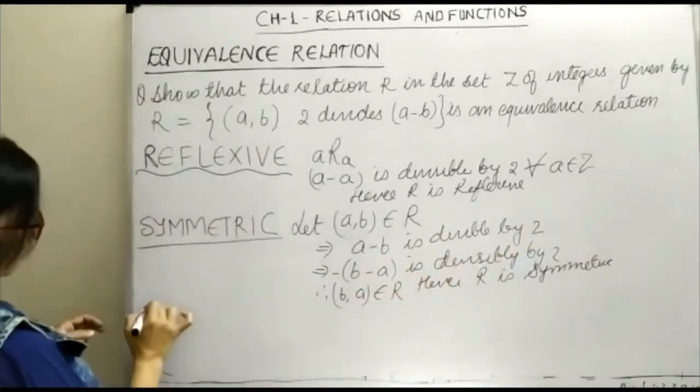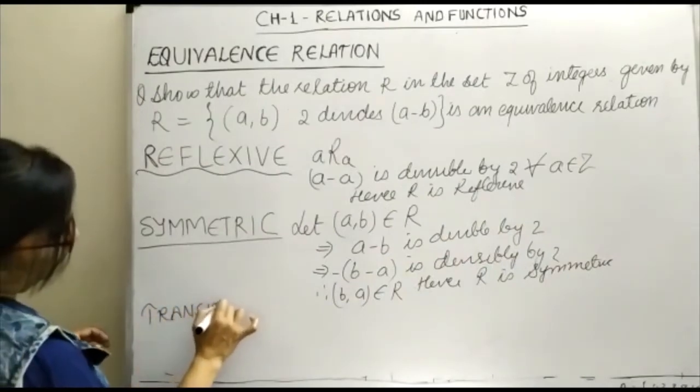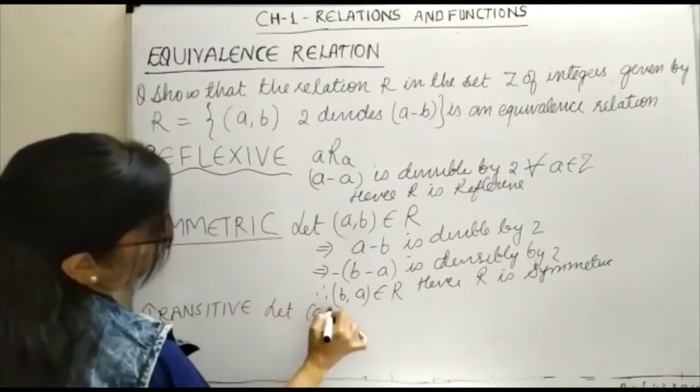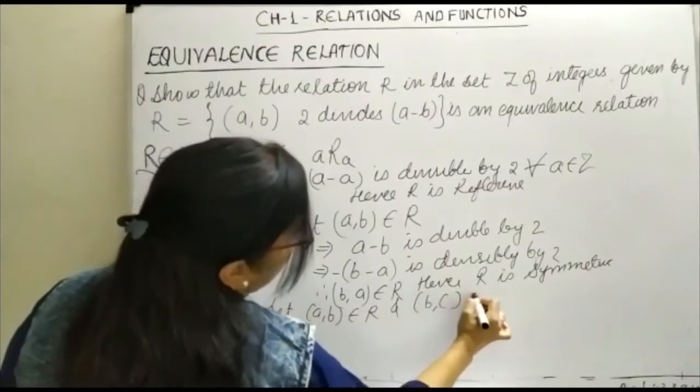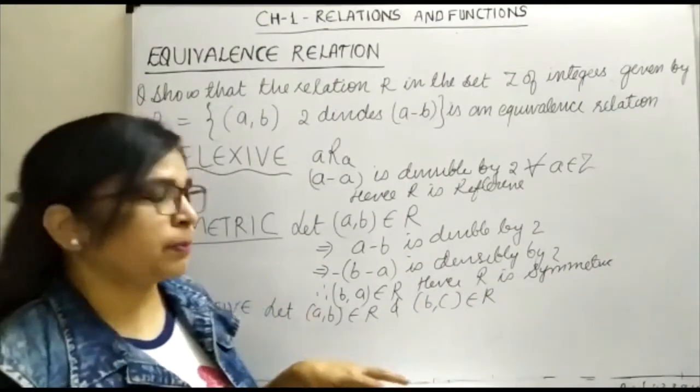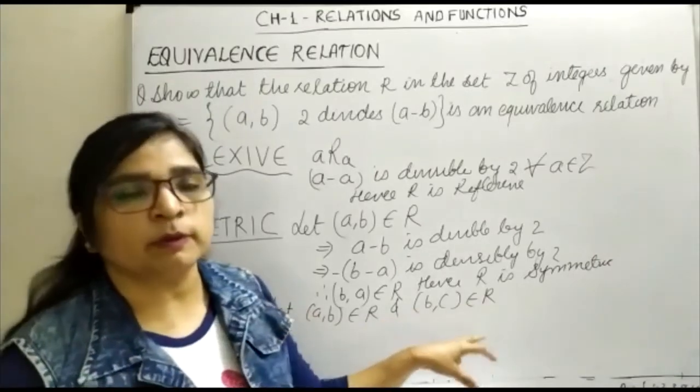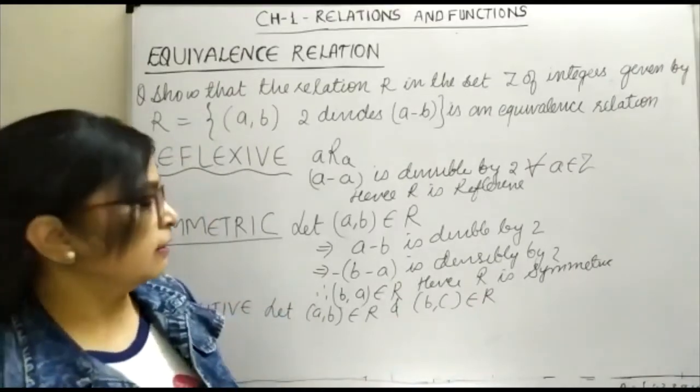Now let us check the transitive property. In transitive property, let (a,b) belongs to R and (b,c) belongs to R. If (a,b) belongs to R, this implies A minus B is divisible by 2. Similarly, (b,c) belongs to R implies B minus C is divisible by 2.